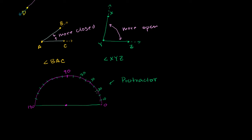Each of these marks represents 10 of those sections. What you do for any given angle is you put one of the sides of the angle — each of the rays of an angle are considered one of its sides — at the vertex of the angle at the center of this half circle, or the center of the protractor. Then you put one side along the zero mark. I'm going to redraw this angle right over here at the center of this protractor.